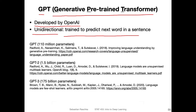GPT version one was a model consisting of 110 million parameters and came out in 2018. Now we are going to talk about the second version, which came out only one year later. It has 1.5 billion parameters — substantially larger, more than 10 times larger.